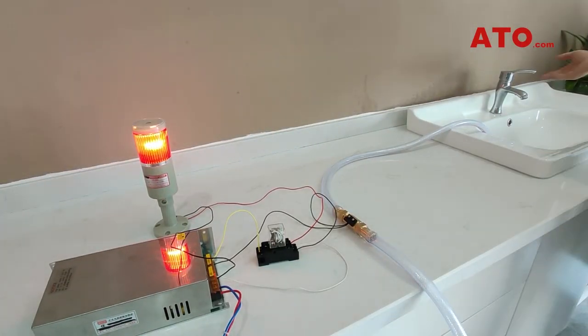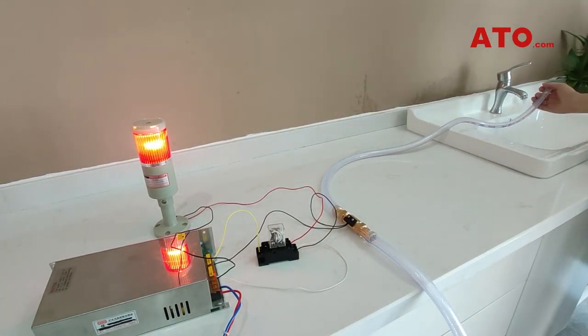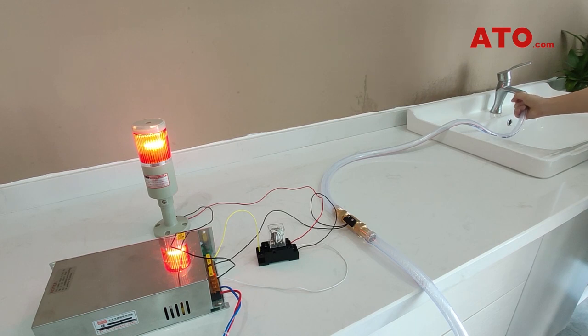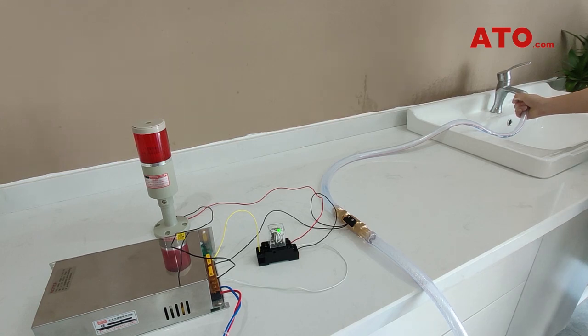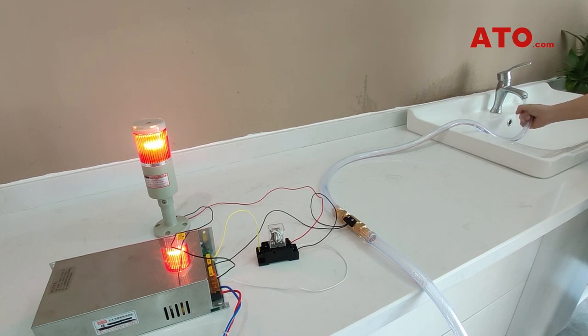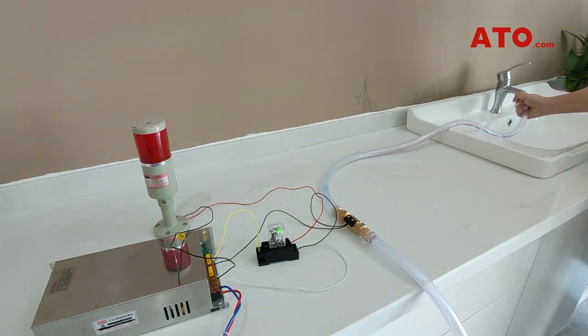With everything done, we can power on the system. It can be seen that when there is no water flow through the pipe, the relay turns on the warning light.